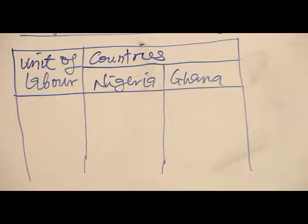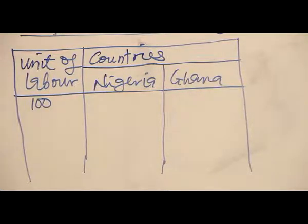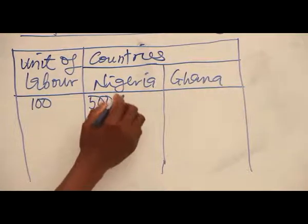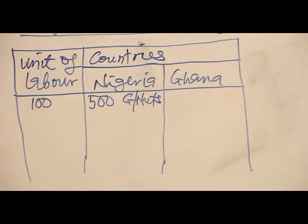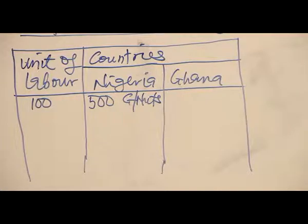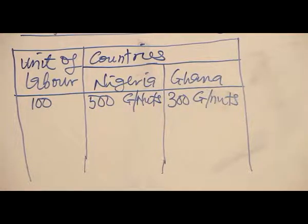The 200 units of labor will be split into two: 100 for the production of one commodity like cocoa, and 100 for the production of the other commodity. With the first 100 units of labor, Nigeria produced 500 units of groundnuts, while Ghana used its 100 units to produce 200 units of groundnuts.